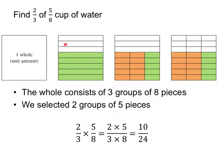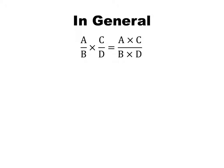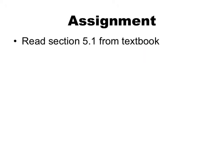Drawing a picture like this illustrates why multiplying fractions works. In general, to multiply fraction a/b times c/d, we simply multiply the numerators and multiply the denominators. That's it for the section 5.1a lesson. Your assignment before next class is to read section 5.1 from the textbook.